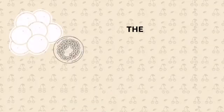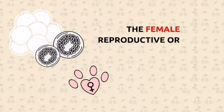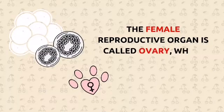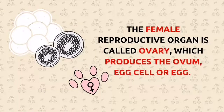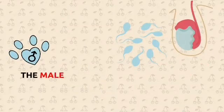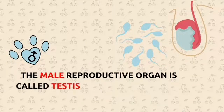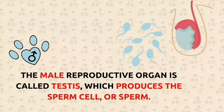The female reproductive organ is called ovary, which produces the ovum, egg cell, or egg. The male reproductive organ is called testis, which produces the sperm cell, or sperm.